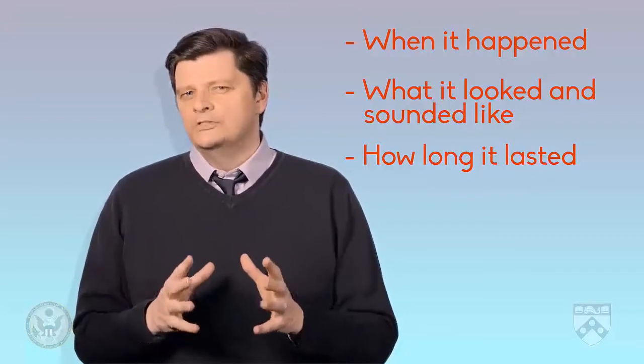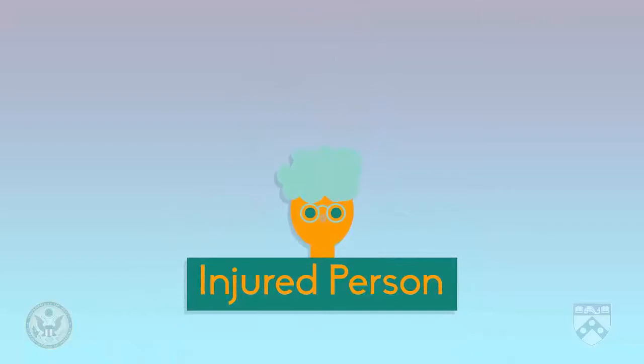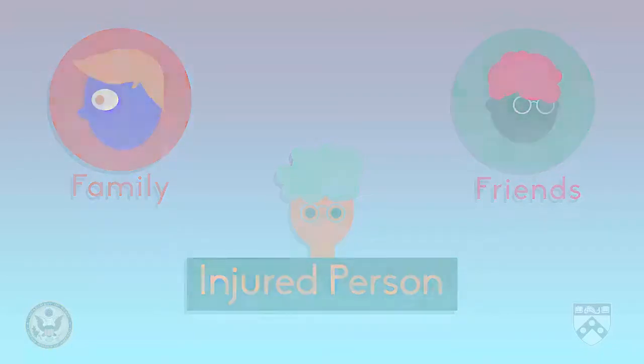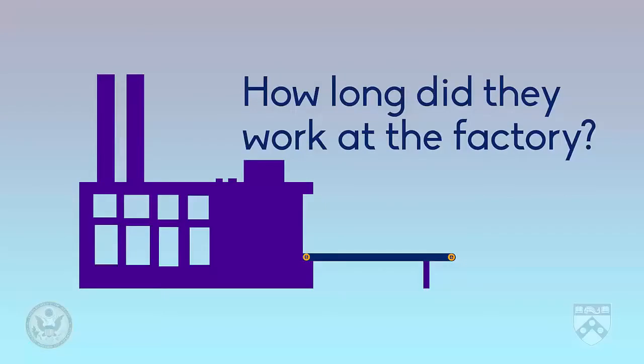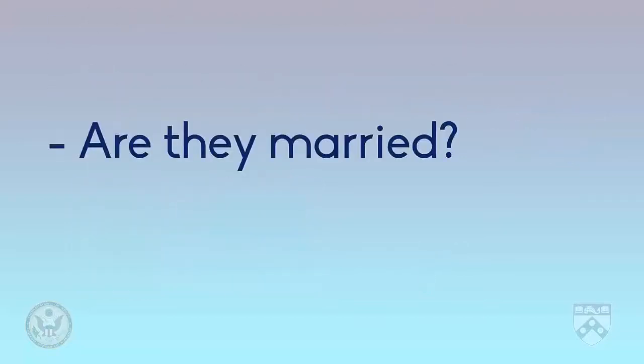The second type of source is a person who is related to someone who plays an important part in the story. In the case of the factory explosion, it could be someone who is related to the injured person, perhaps a friend or family member. This friend or relation can provide personal details about the injured person — what type of person they are, how long they worked at the factory, whether they are married, if they have any children, and maybe talk about their injuries.